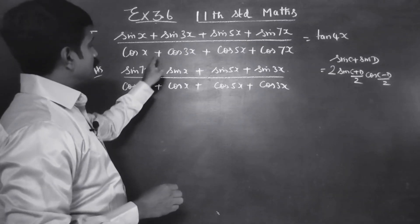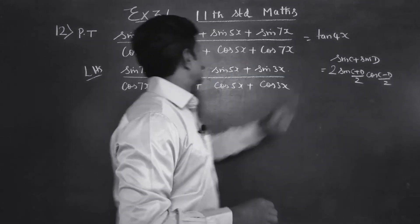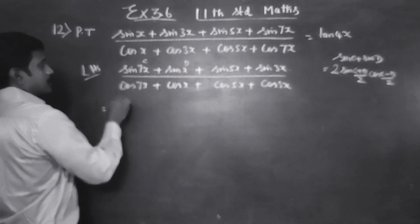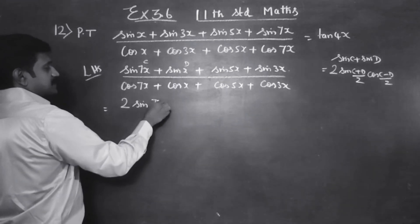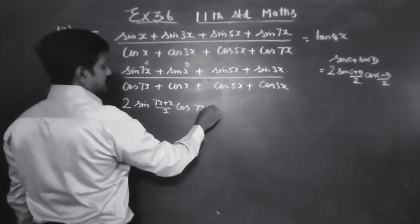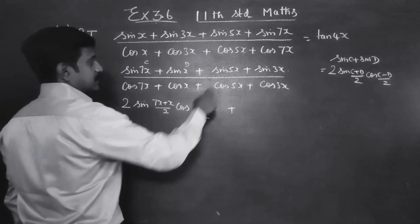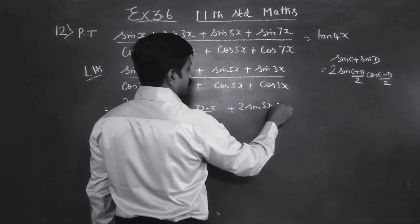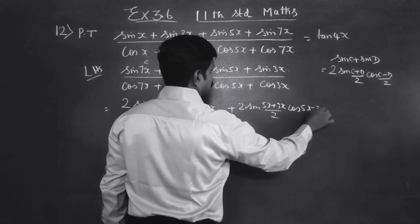The formula is used in the numerator: first and second terms combine, third and fourth terms combine. This is my c and this is my d. Applying this formula to the numerator: 2 times sin (7x plus x) by 2, cos (7x minus x) by 2, plus 2 sin (5x plus 3x) by 2, cos (5x minus 3x) by 2. Numerator is over.